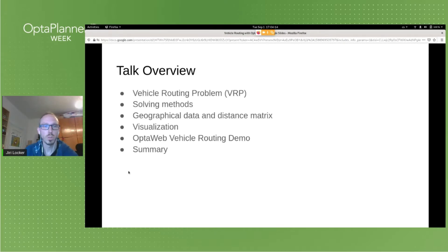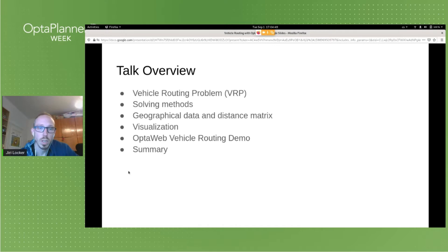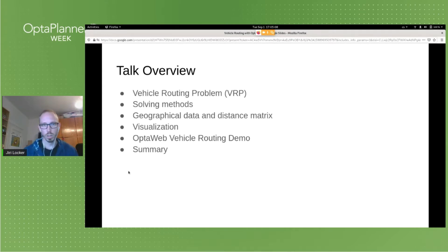I will start with the introduction of the vehicle routing problem — why it is interesting and how it's different from other use cases that Optaplanner can handle. I will shortly talk about the solving methods used for vehicle routing problems. Then I will share some useful tips and technologies we used for building the OptaWeb vehicle routing application, which is a template application that solves interesting problems specific to vehicle routing that are out of scope of Optaplanner itself.